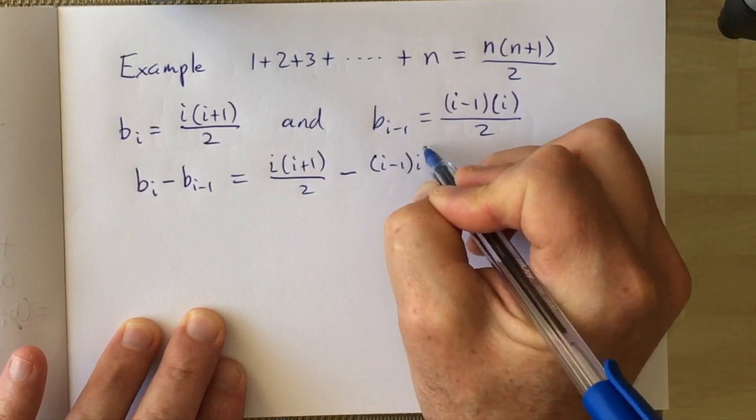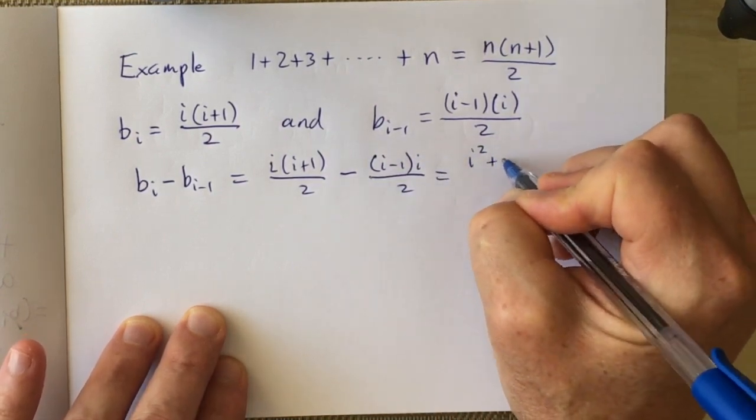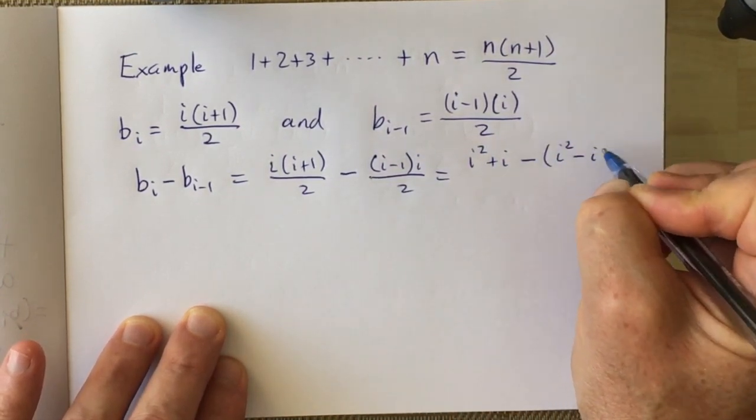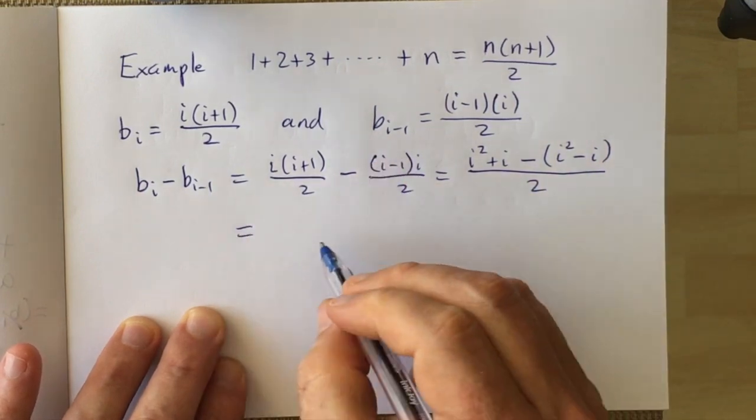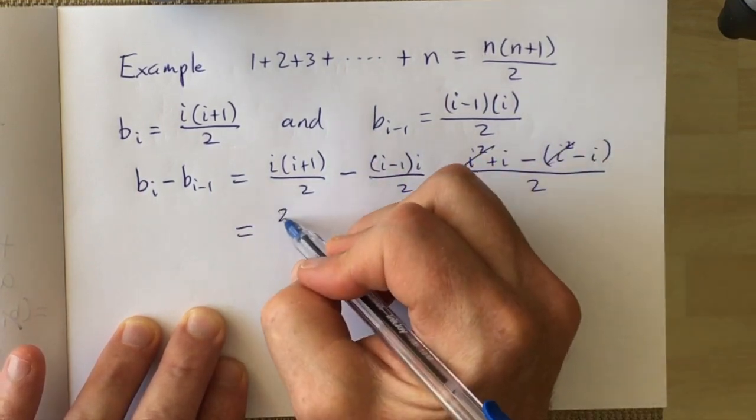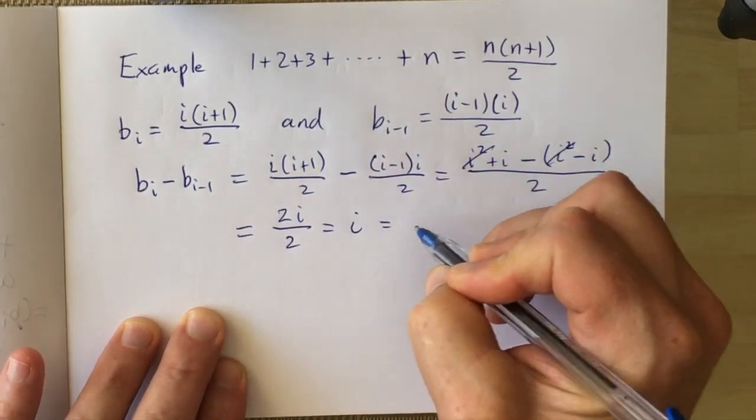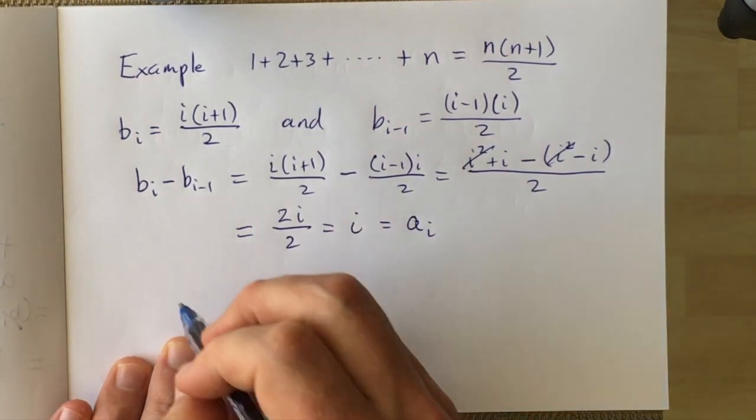And their difference, if we do a little bit of algebra, we show that it's equal to exactly i. And i happens to be equal to ai. It's the i-th term in the sum.